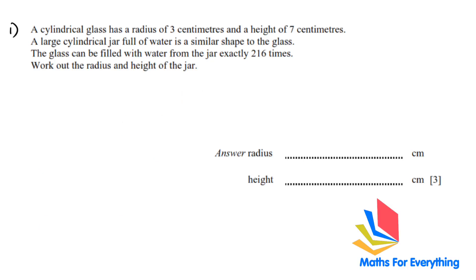Question number one. A cylindrical glass has a radius of 3 cm and a height of 7 centimeters. A large cylindrical jar full of water is a similar shape to the glass. The glass can be filled with water from the jar exactly 216 times. Work out the radius and height of the jar.